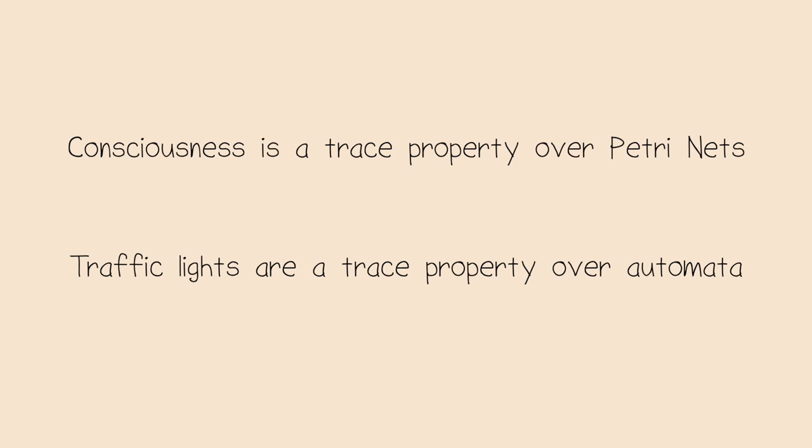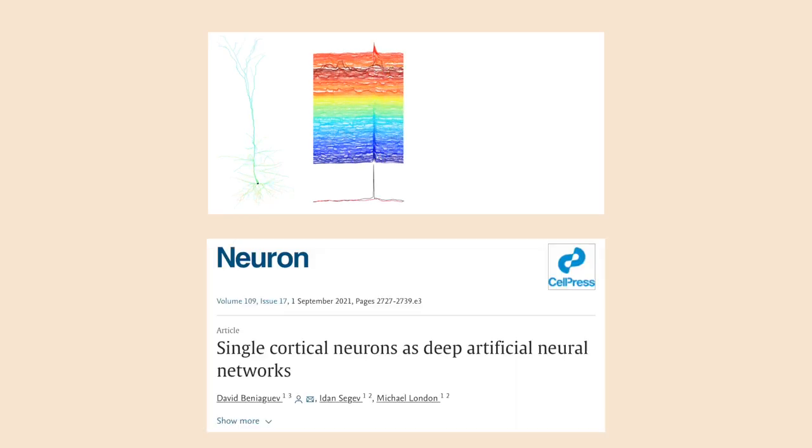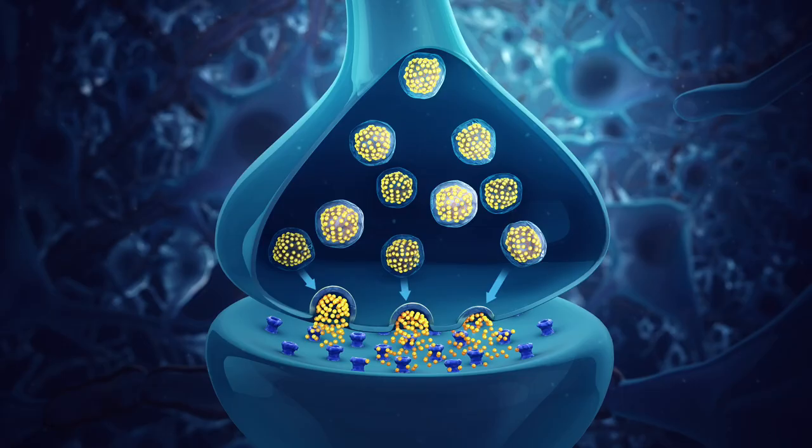But brains are not implemented through automata. One abstraction is that of a network of electrical switches. However, this does not quite do the brain justice. For example, in order to predict the behavior of a single neuron, researchers at the Hebrew University had to set up an electrical circuit of 1,000 switches in order to obtain the same complexity with 99% accuracy. To be on the safe side, we can go a level deeper and look at the chemical reactions of the neurons. Petri nets are machines that can model chemical processes.